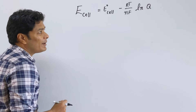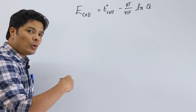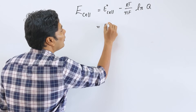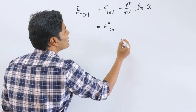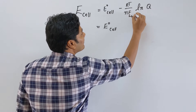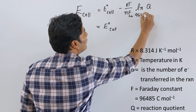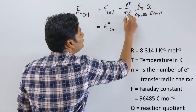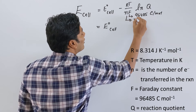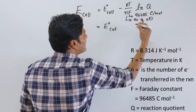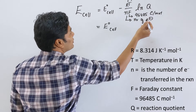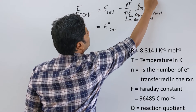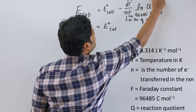I am using the symbol Q, not K, because we do not know whether we are at equilibrium. We can simplify this. The value of F is 96,485 coulombs per mole. N is the number of electrons in the given process. T is temperature in Kelvin, and R is 8.314 joules per mole·Kelvin.